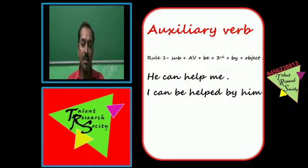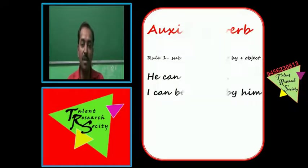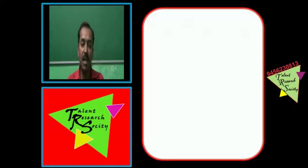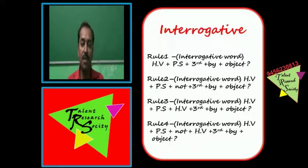Ab hum banayenge — subject 'I', phir 'can', phir 'be', phir third form 'helped', phir 'by', phir 'he' ka object 'him'. Sentence ban gaya: 'I can be helped by him.'